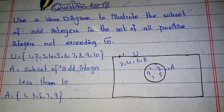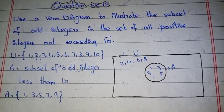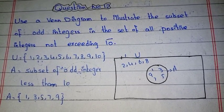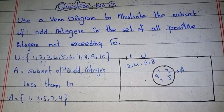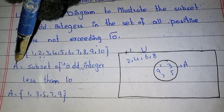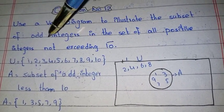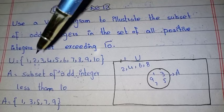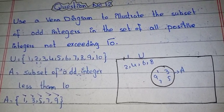Question number 12: we have to use a Venn diagram to illustrate the subset of all integers in the set of all positive integers not exceeding 10. We need to find the universal set — all possible integers up to 10 — so the universal set is from 1 to 10. Then we create a subset of odd integers not exceeding 10, which gives us the set 1, 3, 5, 7, and 9.